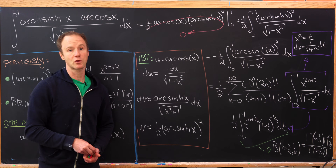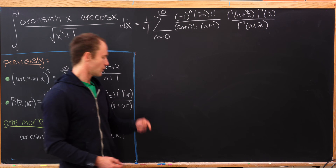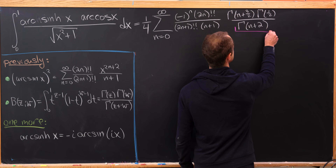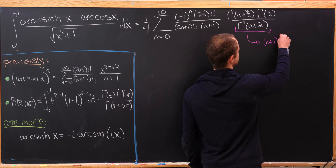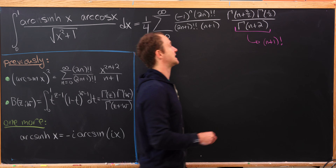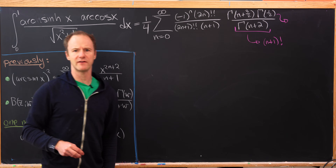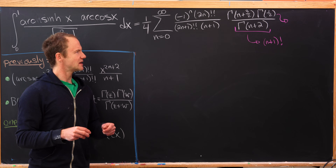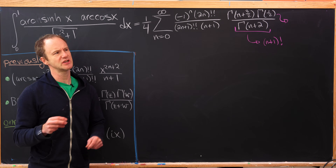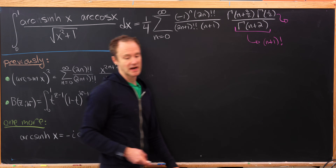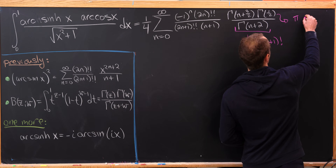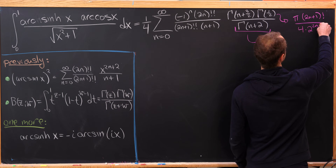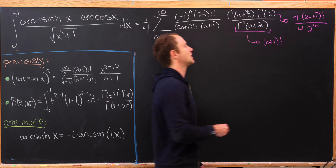Let's summarize where we are and replace these gamma functions with more familiar quantities. Gamma(n+2) is (n+1) factorial. These gamma functions of half-integer powers have well-known values involving the square root of pi, which comes from the Gaussian integral. In the end, we get pi times (2n+1)! all over 4 times 2 to the 2n — plus another n factorial.